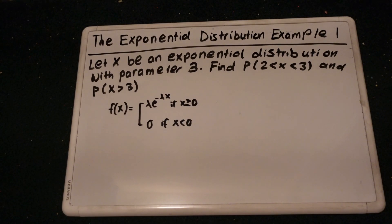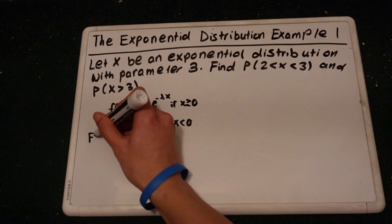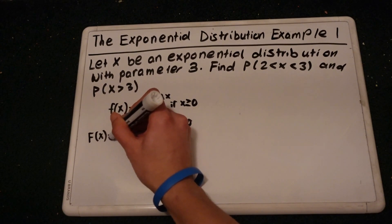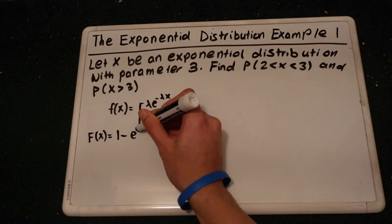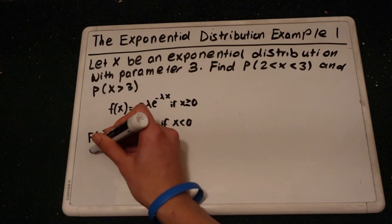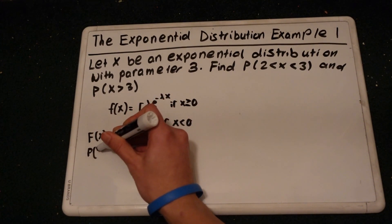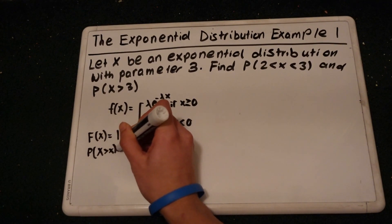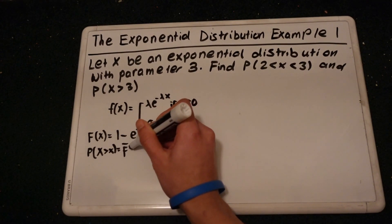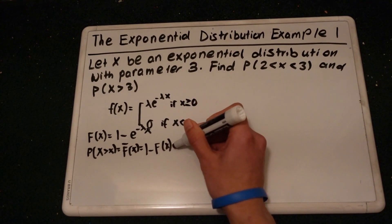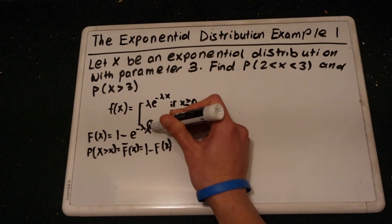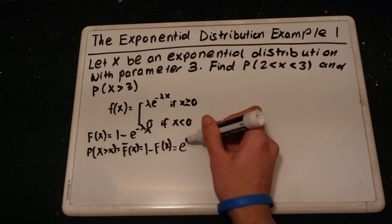And there's another formula I would like to mention. It's called the cumulative distribution function. F of x is equal to 1 minus e to the negative lambda x. And the probability that x is greater than some value is equal to 1 minus F of x, which is just e to the negative lambda x.